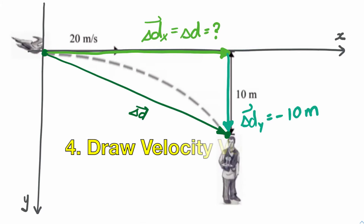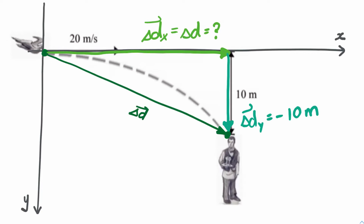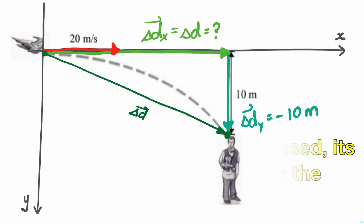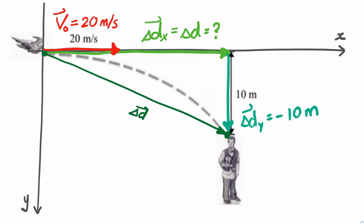Next we look at velocity. The moment the bird releases its dropping, the dropping already has the same velocity as the bird due to inertia — objects in motion tend to stay in motion. So the dropping's initial velocity vector is directed to the right, positive 20 meters per second. Since it's only pointing horizontally, the initial velocity equals the horizontal initial velocity, v_initial_x.